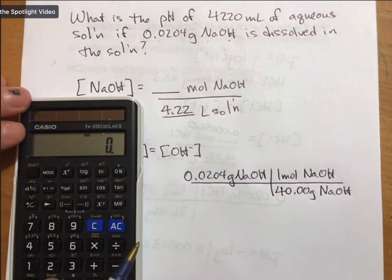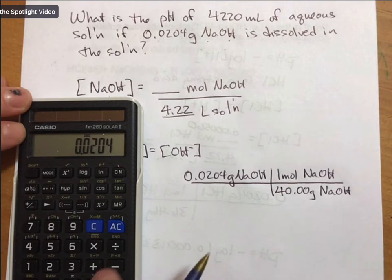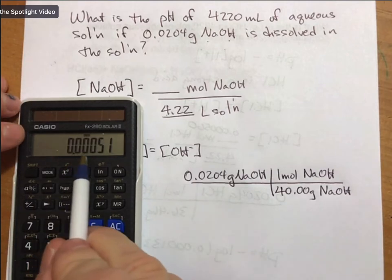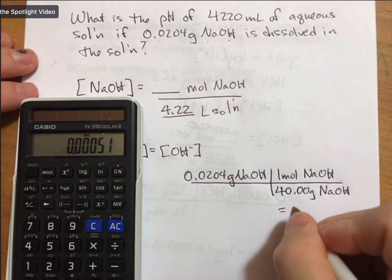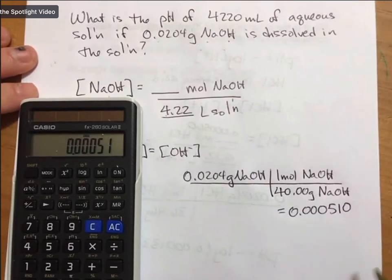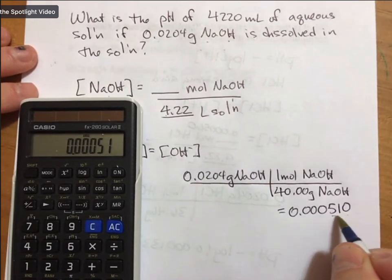So 0.0204 divided by 40 equals 0.000510. I'll add a zero because I like to keep three sig figs.